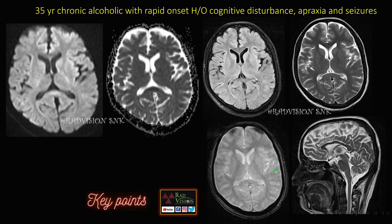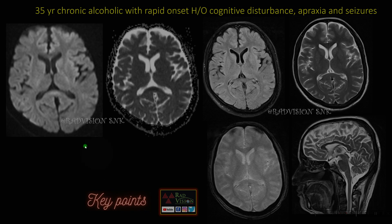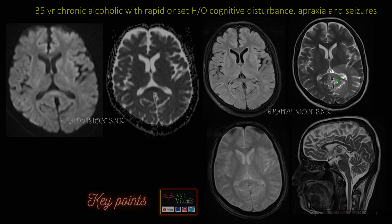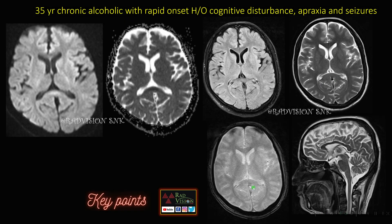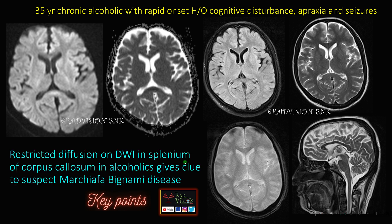Next: a 35-year-old chronic alcoholic presenting with rapid onset of seizures and apraxia. You can see there is restricted diffusion on DWI in the splenium of corpus callosum with low ADC values, and these signal changes are not clearly depicted in the other sequences. Whenever you see an alcoholic with restricted diffusion on DWI in the splenium or in the corpus callosum, definitely suspect Marchiafava-Bignami disease. Restricted diffusion on DWI in chronic alcoholics gives a clue to suspect Marchiafava-Bignami disease.